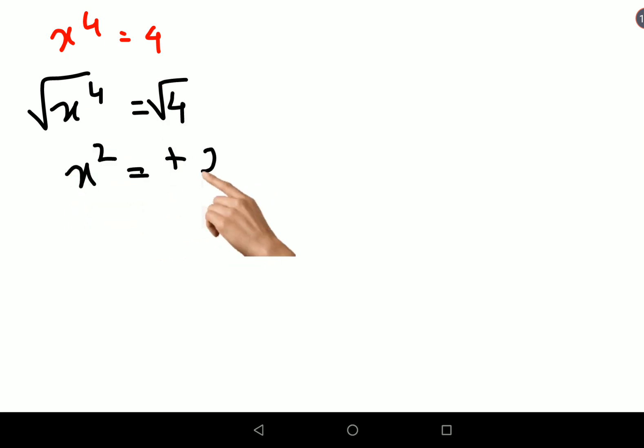equals plus 2, or we can say x squared equals minus 2. Now again, in order to find the value of x, we will take the square root, so we have x equals plus or minus 2.